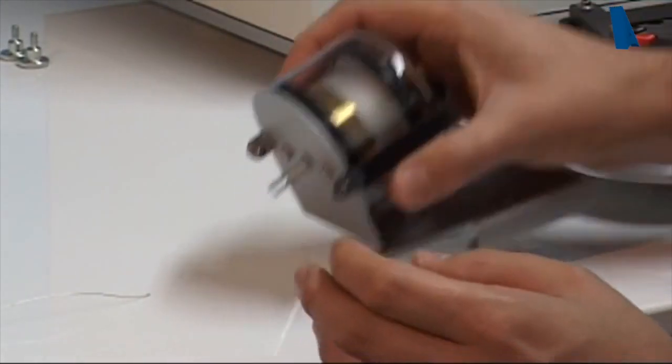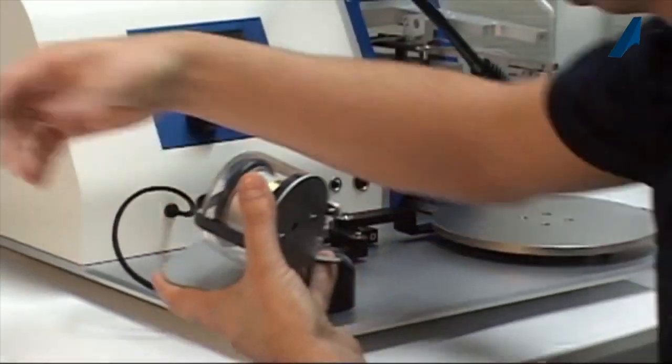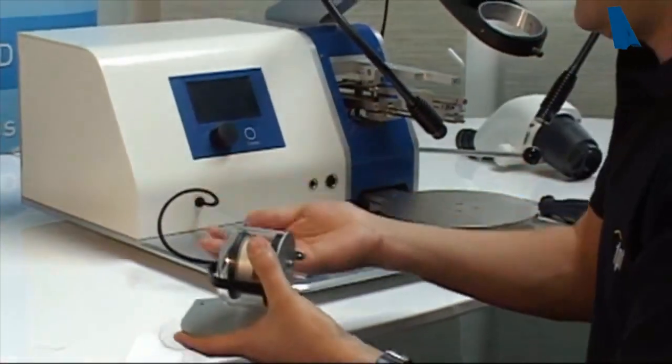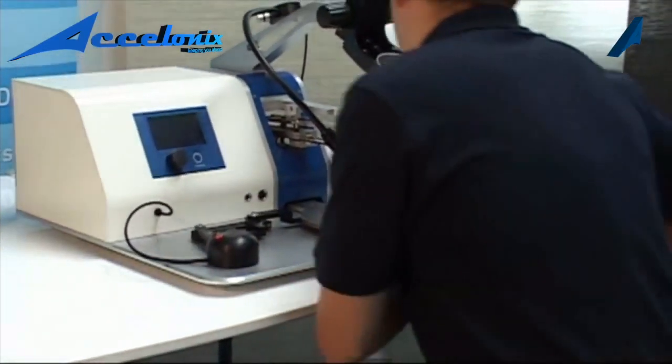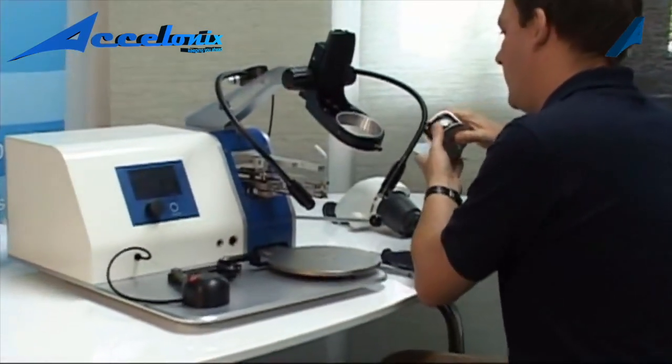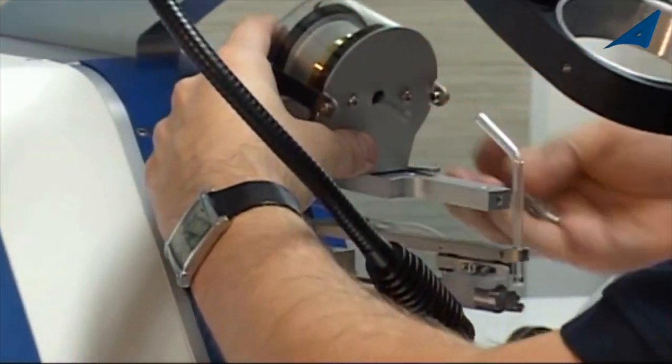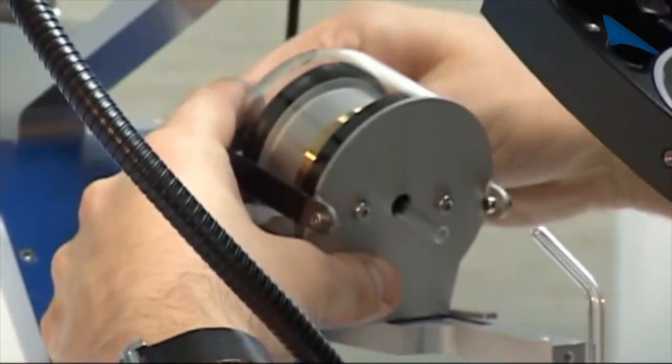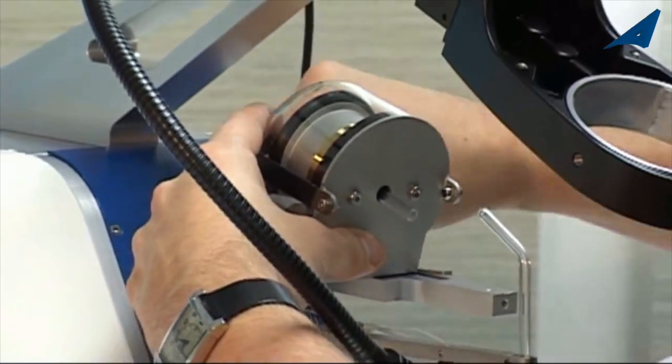Close the fixation. Now we take this manual spool with the two screws and we will attach it to the bonder, like this.